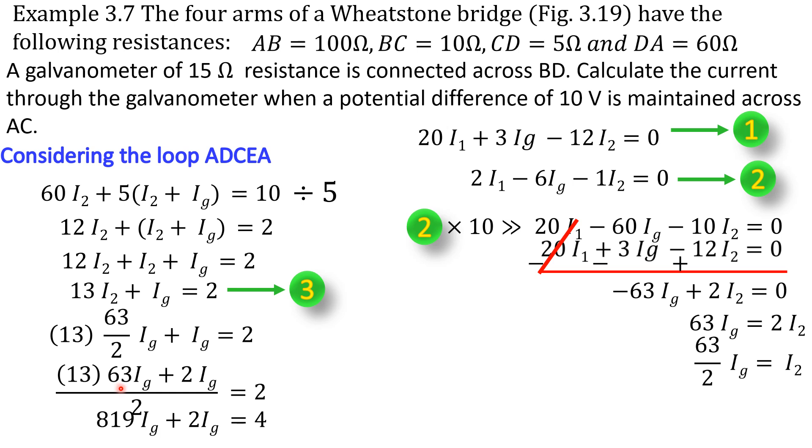13 into 63, 819 IG plus 2 IG, and 2 into 2 is 4. So is equal to 4. Adding these two values, we get 821 IG is equal to 4. So bring this 821 on the right hand side, we get IG value. So IG value is equal to 4 by 821.